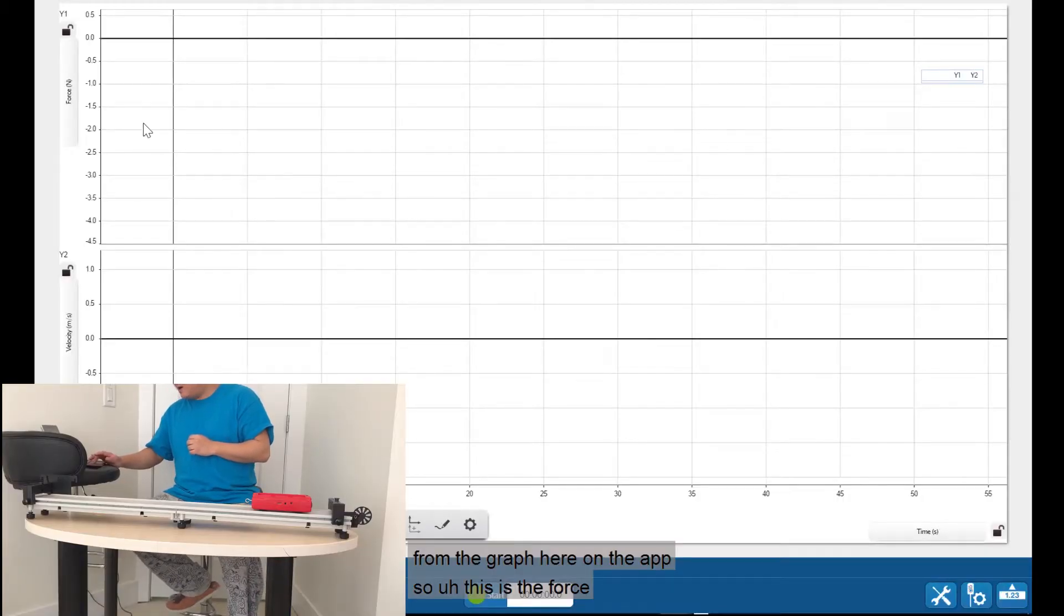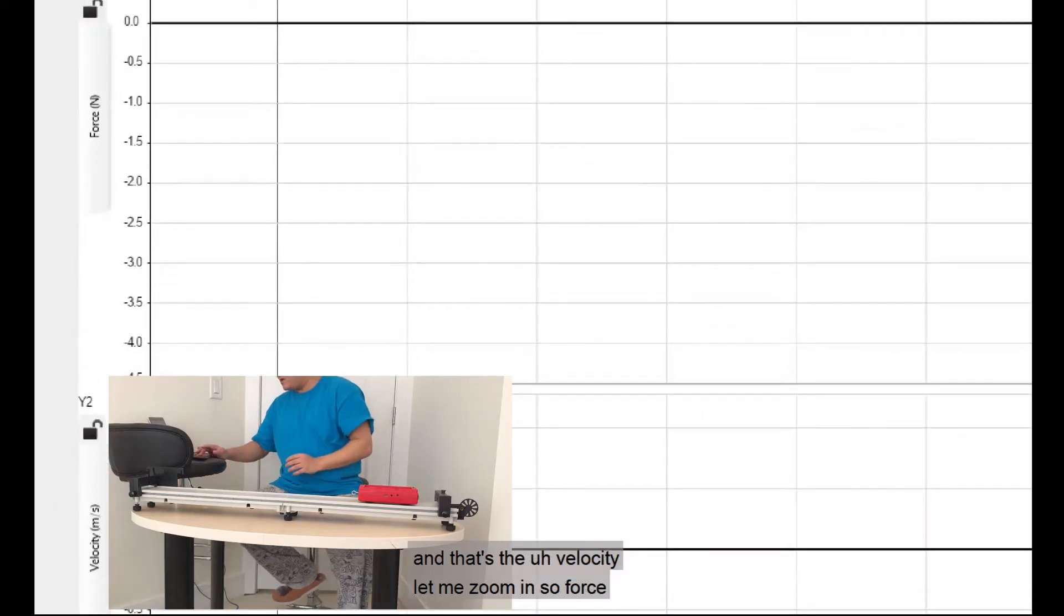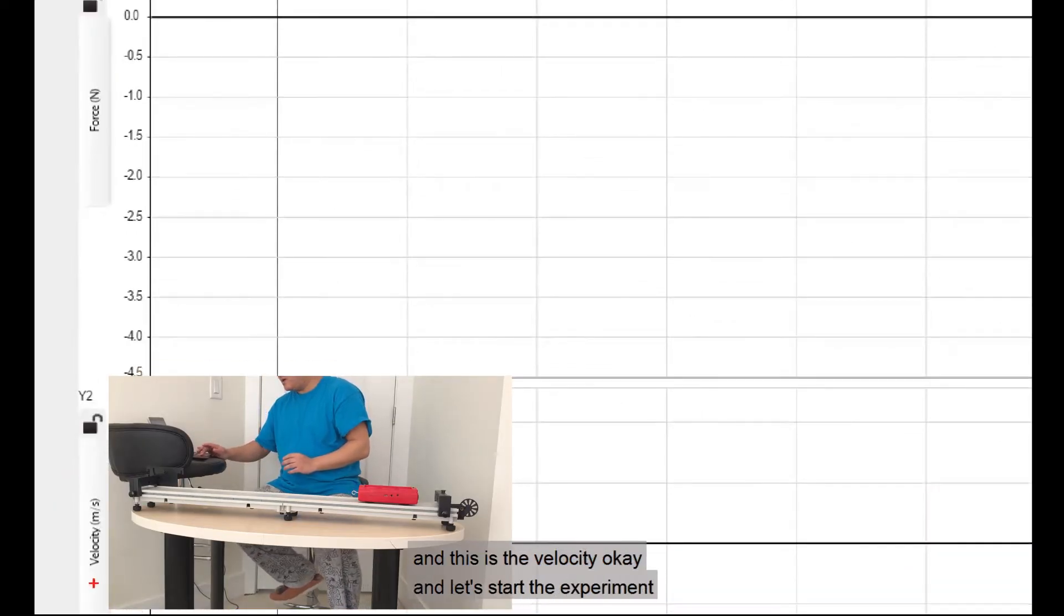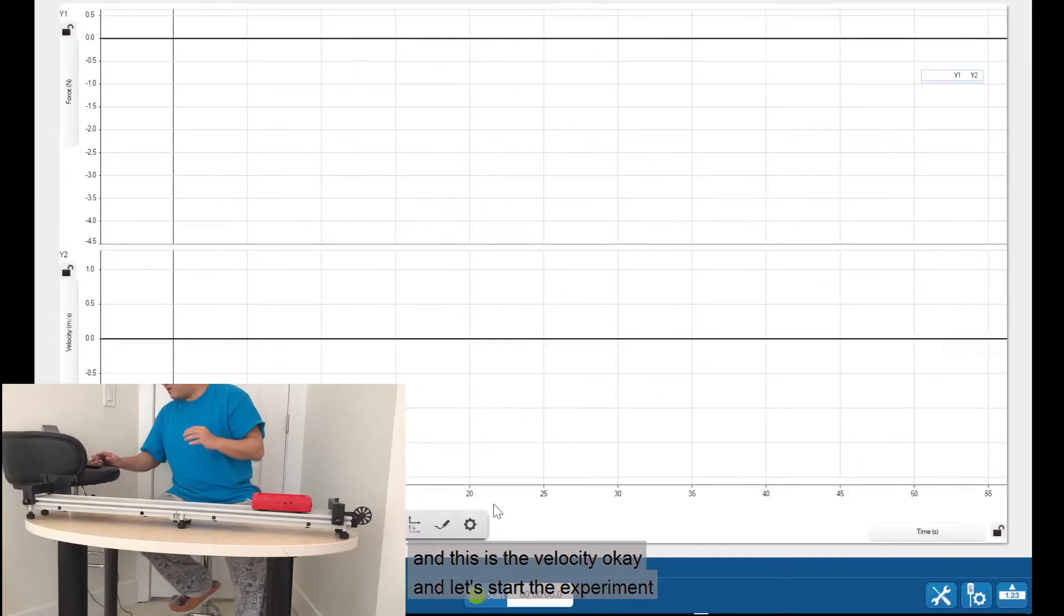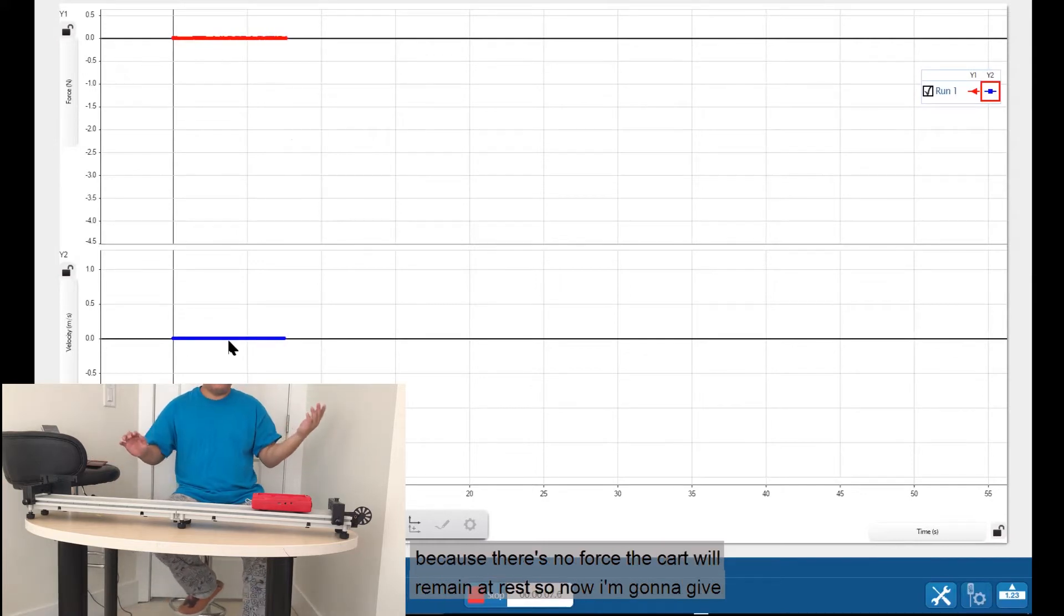You can also see this from the graph here on the app. So this is the force and that's the velocity. Let me zoom in. So force and this is the velocity. And let's start the experiment. So now you can see the force is zero and the velocity is zero as well because there's no force the cart will remain at rest.